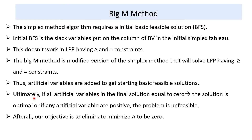Since we are not interested in the artificial variable values, we will try to make them equal to zero. If all artificial variables in the final solution equal zero, the solution is optimal. If any artificial variable has a positive value, the problem is infeasible. Our objective is to eliminate or minimize artificial variables to zero.